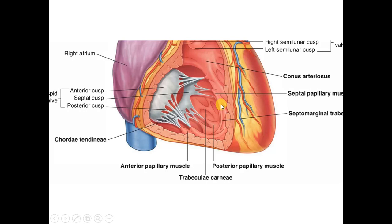The septal papillary muscles are also present. These cusps are attached to the fibrous skeleton of the heart. The chordae tendineae connect to the papillary muscles, so when the ventricle contracts, the chordae tendineae become tense and do not allow the leaflets of the tricuspid valve to prolapse back into the atrium, preventing regurgitation of blood into the right atrium.